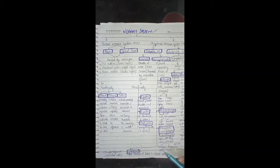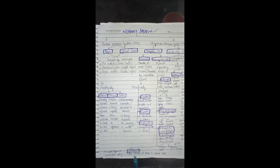Microglia are scavenger cells and phagocytic cells that perform phagocytosis — they digest debris. The fourth cell is ependyma, which is a single layer of cuboidal cells. Its function relates to the brain and the spinal cord — specifically it lines the cavities of the brain and the spinal cord.